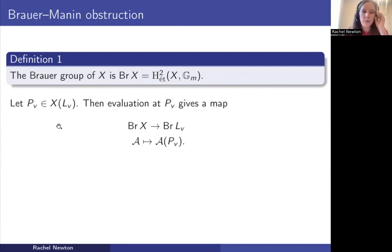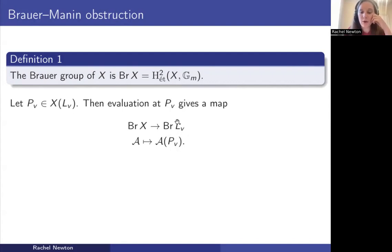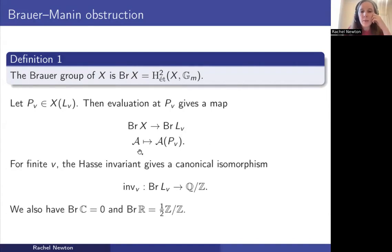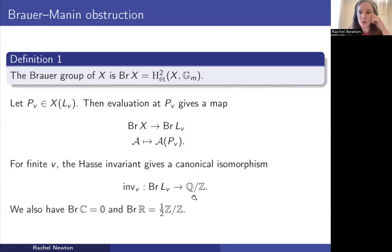What properties does the Brauer group have? First of all, you can evaluate elements of the Brauer group at points. If I have a local point P_V over some field L_V, then I can evaluate an element of the Brauer group at that point and obtain something in the Brauer group of the field L_V — that's just by functoriality. Brauer groups of local fields like L_V are pretty simple.